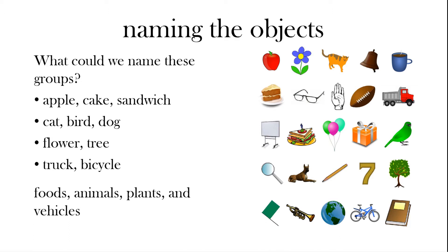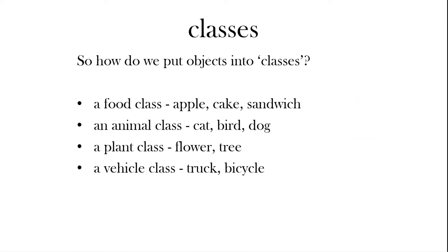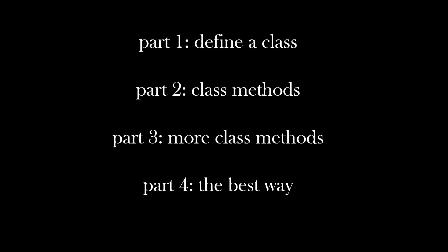Quite straightforward. So these groups could be called classes. We could put these objects into classes — the food class, the animal class, the plant class, and the vehicle class. In this video we're going to have four parts. Part one: define a class. Part two: write functions, which are called methods in a class. Part three continues that. Part four will show you the best way of what we're doing.